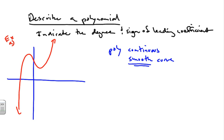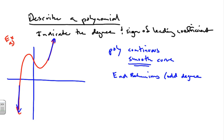The next thing is to look at the end behaviors — what happens at the ends. Notice how it goes up to the right and falls to the left. Because it's going up to the right and falling to the left, we know that it should be an odd degree, so maybe a cubic function or a fifth degree polynomial.